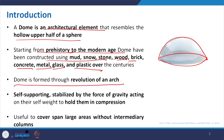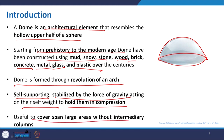A dome is formed through the revolution of an arch — self-supporting and stabilized by the force of gravity acting on its self-weight, holding it in compression. It is useful for covering large spans. Starting from the dome of the Taj Mahal to the Pantheon in Rome, it basically helps us to have a column-less structure. A vault serves the same purpose for corridors, but domes are used for larger spans.